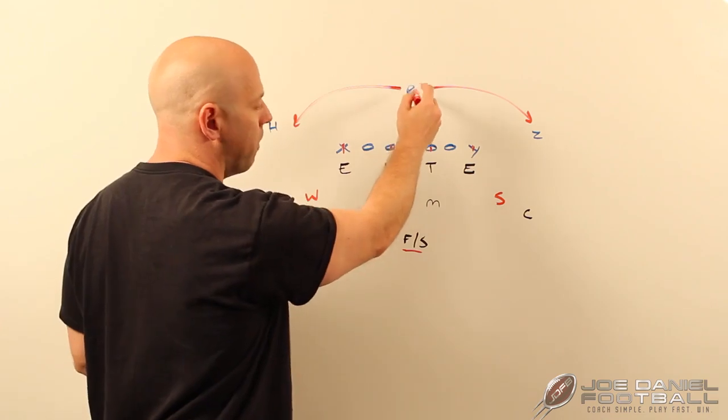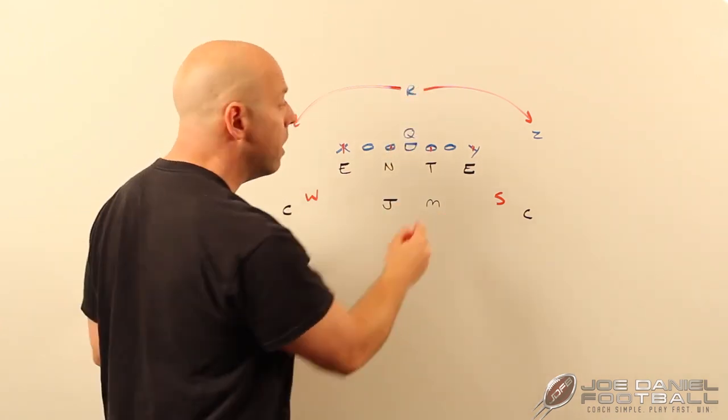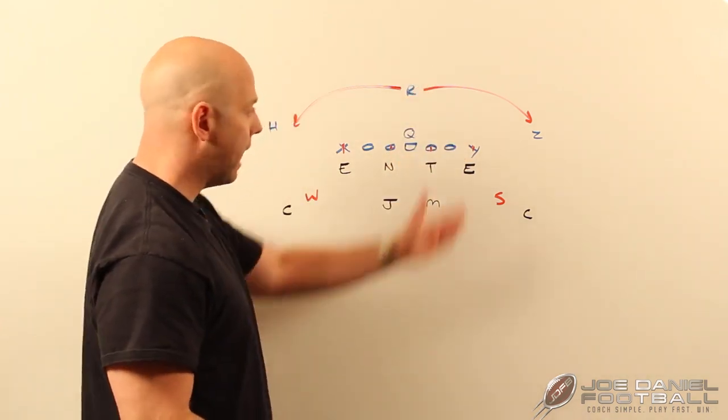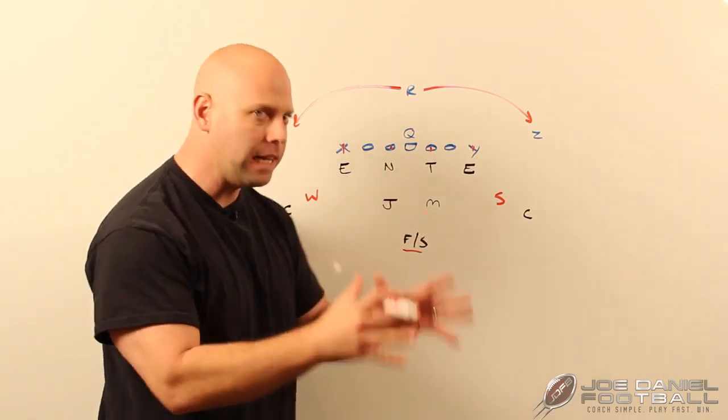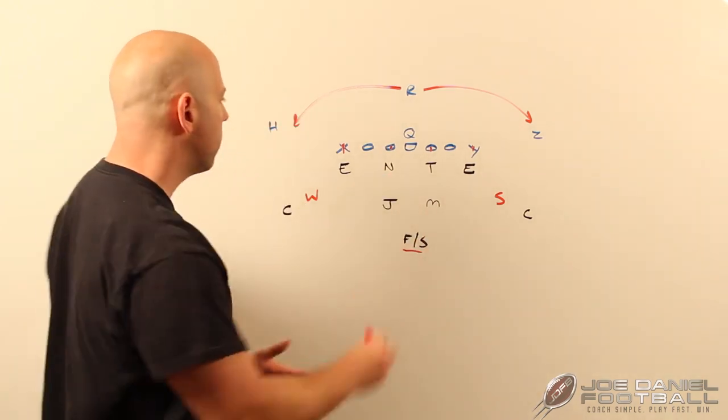If this running back is standing at 6-7 yards off the ball, your linebacker is standing at 5. If he gets a good read, he should be able to meet that guy at the line of scrimmage. Play to meet guys at the line of scrimmage, not to meet them 2 yards in the backfield.